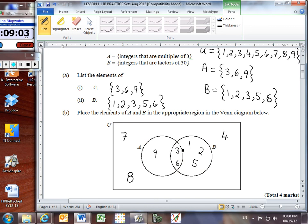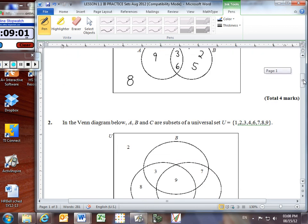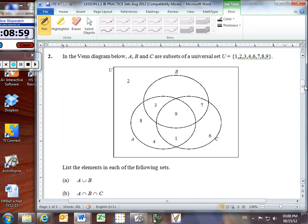Let's go on to number 2. In the Venn diagram below, A, B, and C are subsets of a universal set U, which is comprised of the elements {1, 2, 3, 4, 6, 7, 8, 9}. And we can see in the Venn diagram down here how those numbers have been placed. We can see 1, 2, 3, 4, 6, 7, 8, 9. There they are. Alright, let's do part A.